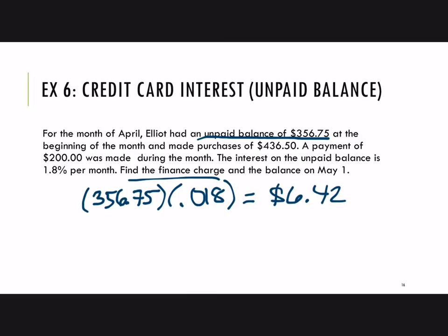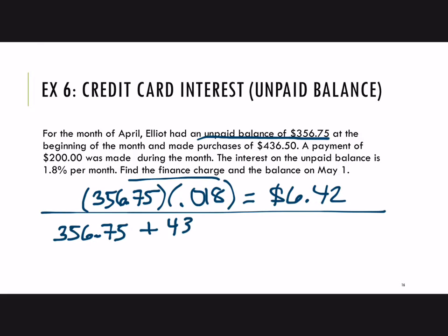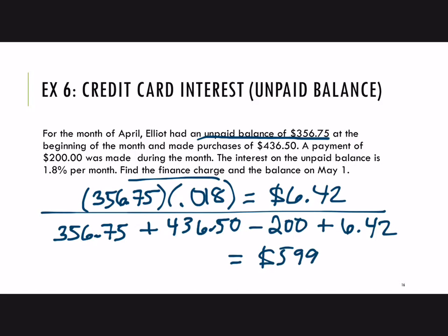Now we need the balance on May 1st, which takes into account everything that happens during April. We start with $356.75 on the card. Any purchases get added — so we add $436.50. A payment lowers the balance, so we subtract $200.00. We also add the finance charge of $6.42. Adding and subtracting everything gives a new balance of $599.67 as of May 1st.